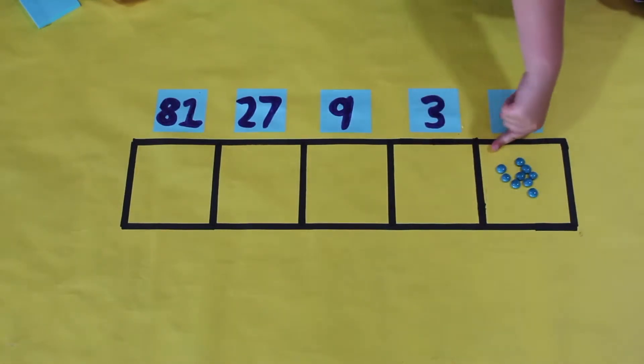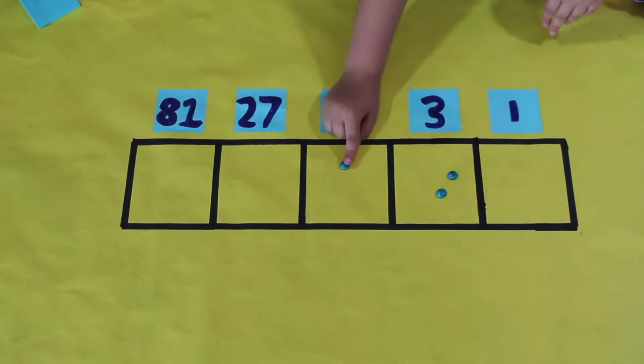We're going to use the three to one rule to put it into its base 3 code. For these three, we put one here and take those out. For these three, we put one in here and take those out. For these three, we put one in here and take these out. And now that there are three here, we put one in this box and take those two out. So the code for nine is one zero zero.